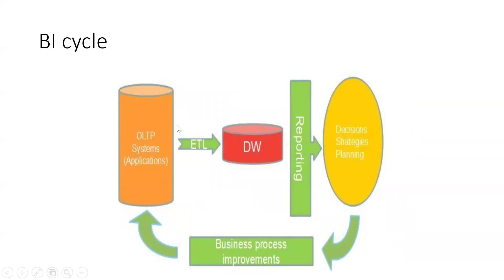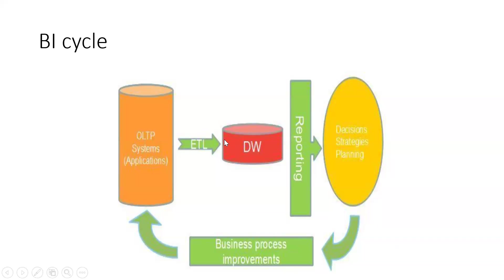OLTP system means the raw database — whatever data we receive from there, it's a raw database. After that, the green color is ETL — Extract, Transform, Load. I'll come to this point tomorrow with more details. It will take data from the raw source and push it into a data warehouse. We are extracting data from the source system and transforming it based on business logic. For example, if we receive amounts in USD but the local currency is something else, we need to convert it.